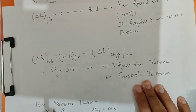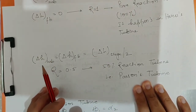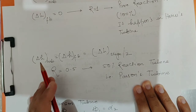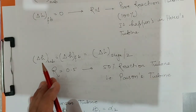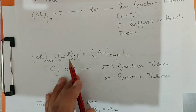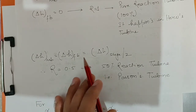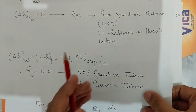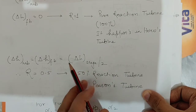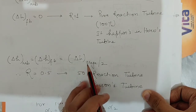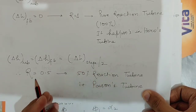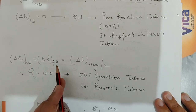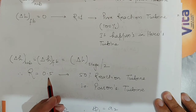One of the most important cases is when the degree of reaction is 50%. In that case, the enthalpy drop in the moving blade equals the enthalpy drop in the fixed blade. By substituting into the equation, we get delta H_mb equal to the enthalpy drop in the stage divided by two. Therefore, the degree of reaction for this turbine — where delta H_mb equals delta H_fb — is 50% or 0.5.